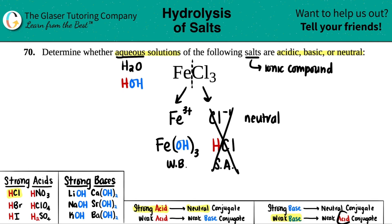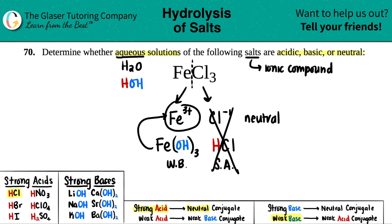With weak bases, the conjugates are still acidic — weakly acidic, but acidic nonetheless. So the conjugate we have, Fe³⁺, is acidic, and we can't cancel it out because it actually has acidic properties.